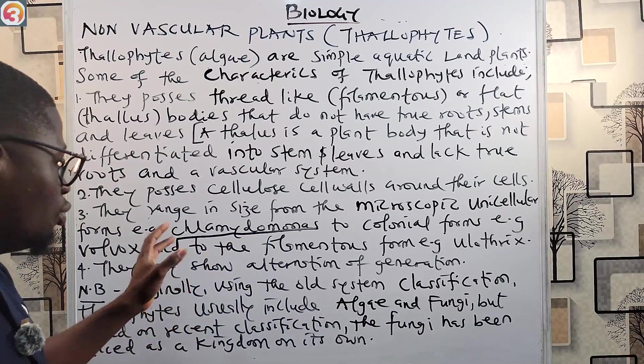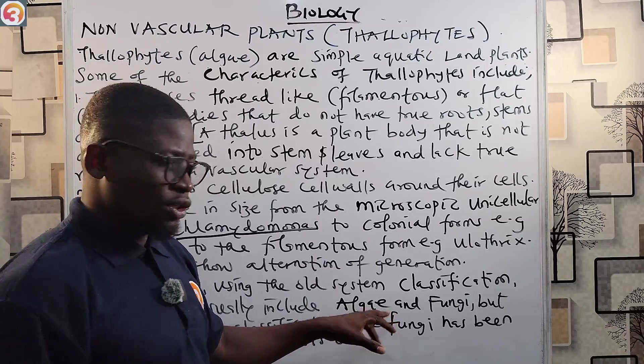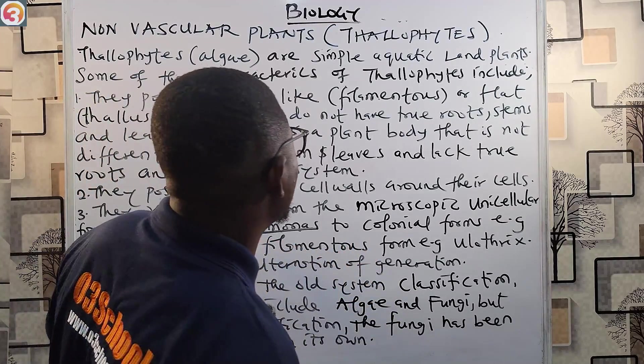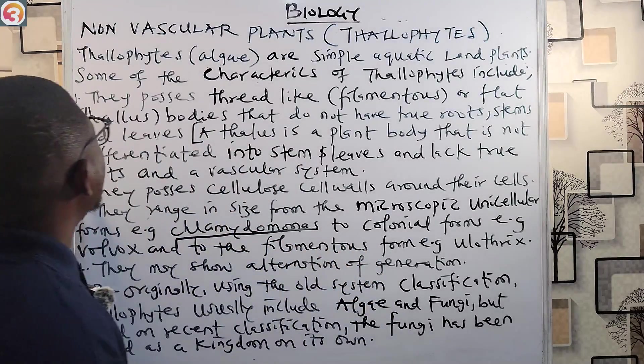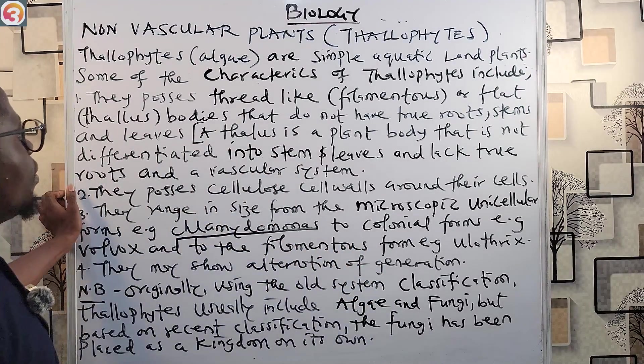Talophytes can be divided into three types of algae: green algae, brown algae, and red algae. They may also show alternation of generation. Using the old system of classification, talophytes included algae and fungi. However, fungi now has its own kingdom, so algae stands on its own as the talophytes in the new classification system.